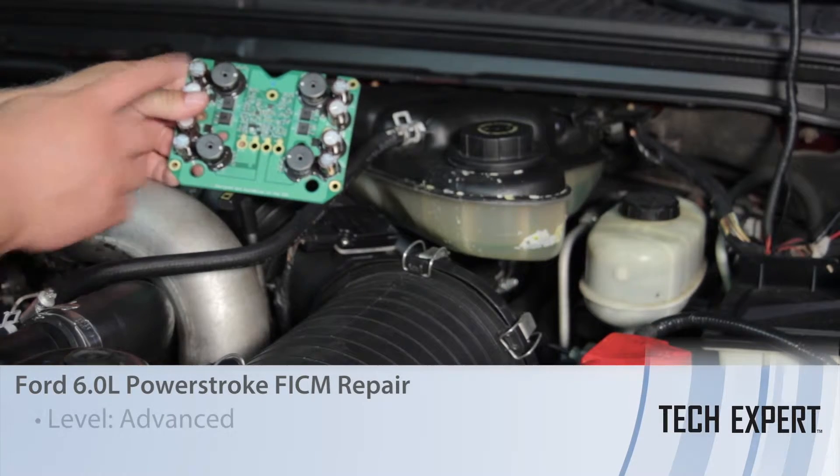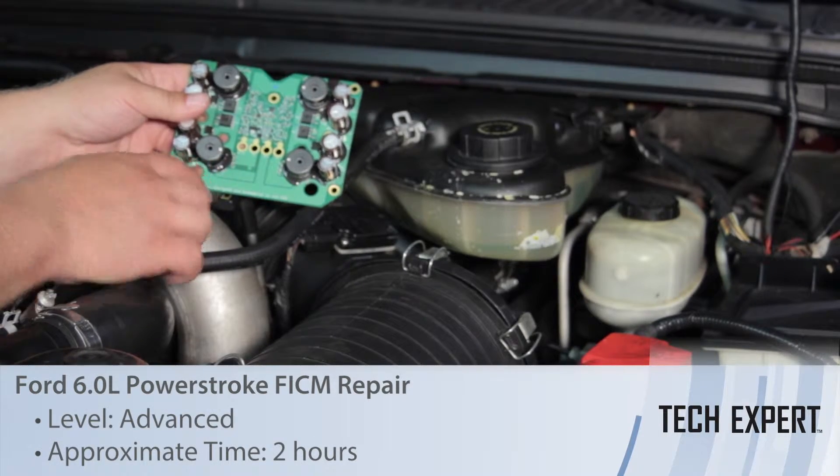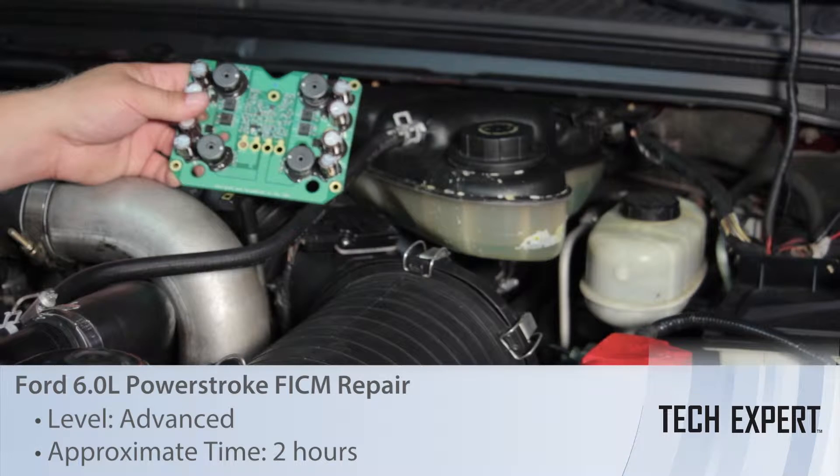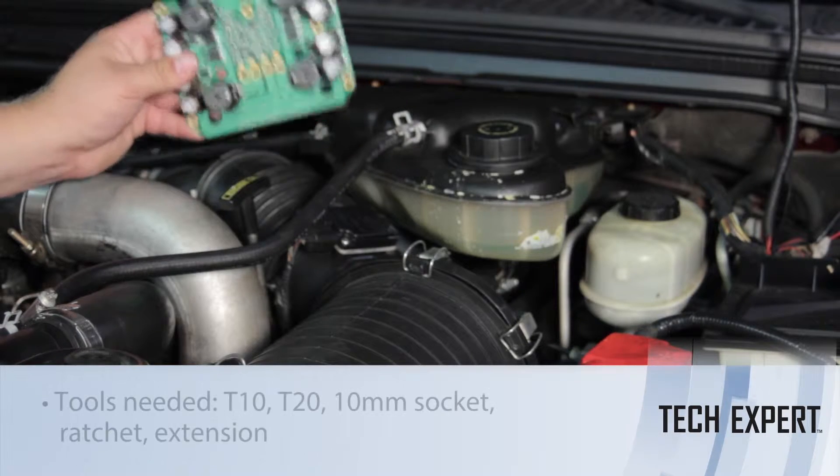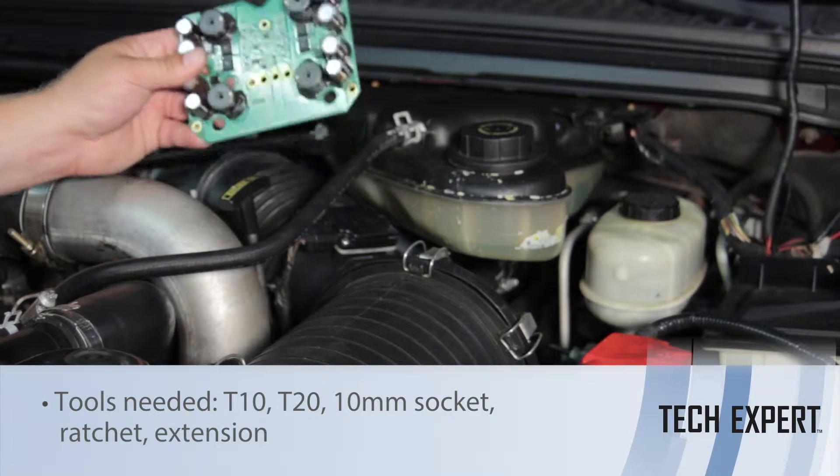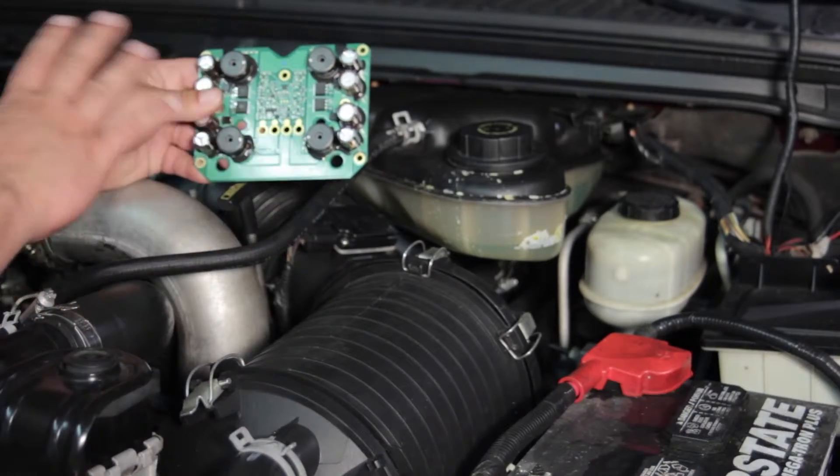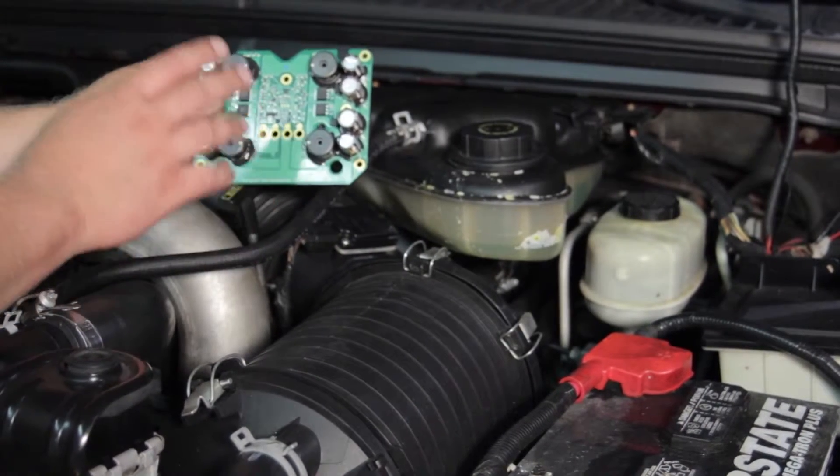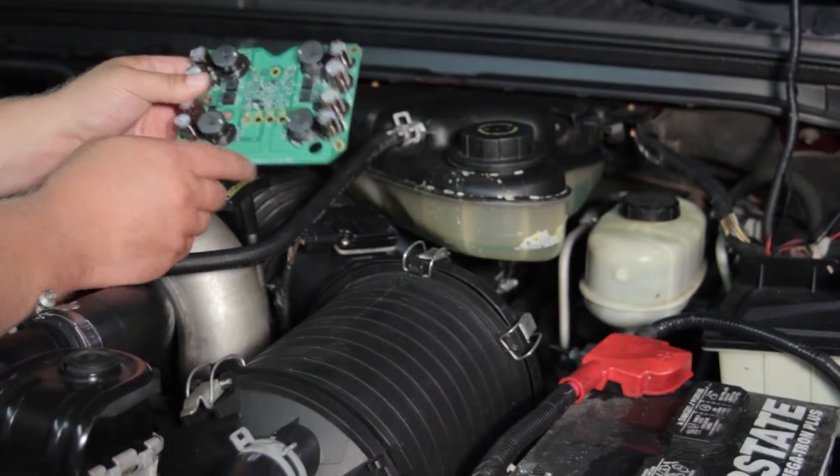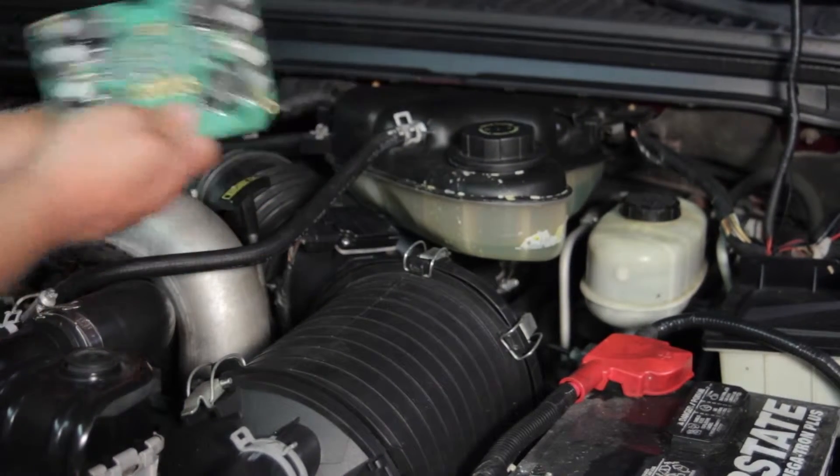Let's discuss repairing the fuel injector control module on the six liter Ford Powerstroke diesel engine. Now we're going to go ahead and replace the circuit board with the faulty capacitors and coils, so no programming is going to be required. We're actually going to repair the circuit board ourselves and we're going to use this component here.